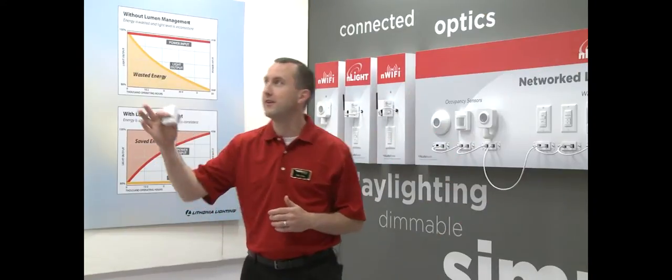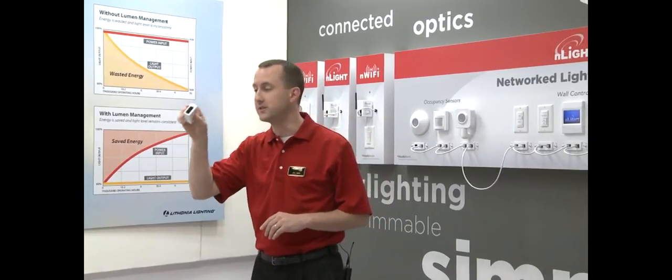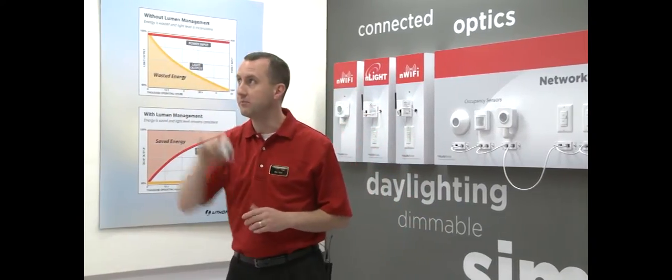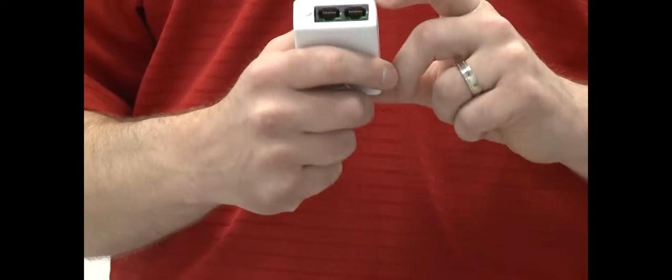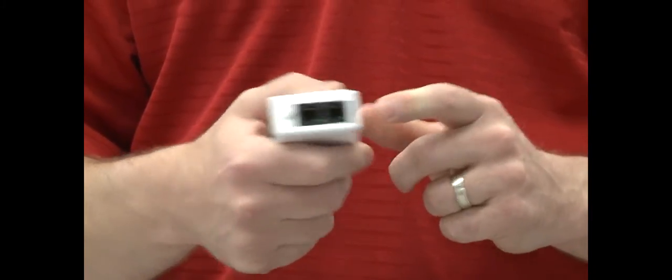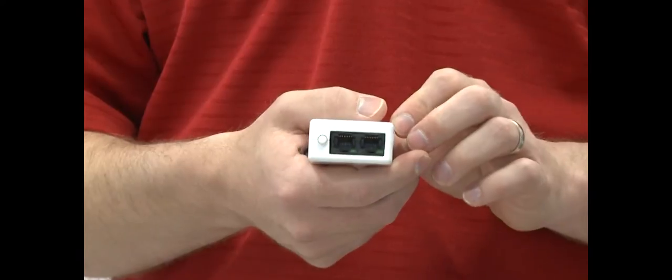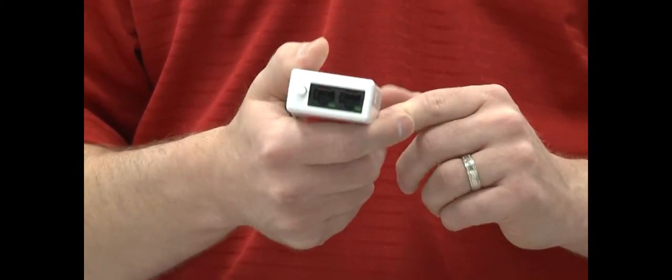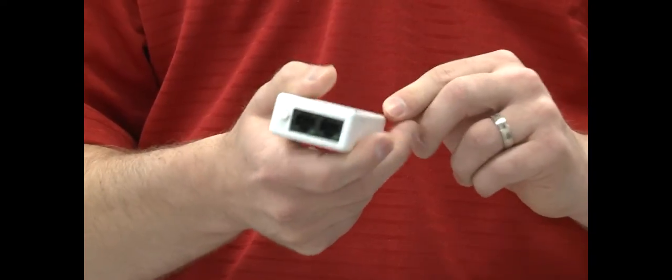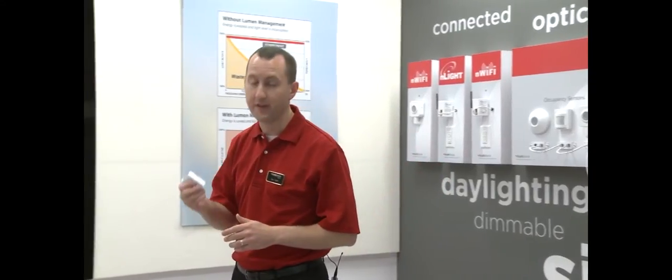In every Lithonia LED fixture, there's a device called a NEO. A NEO is an Nlight device that is powered off of the dimming driver in the fixture. It has two RJ45 ports and connects into the LED driver to both control the fixture up and down for dimming as well as turn it on and off. It provides addressability over the Nlight system and lumen management for the fixture.